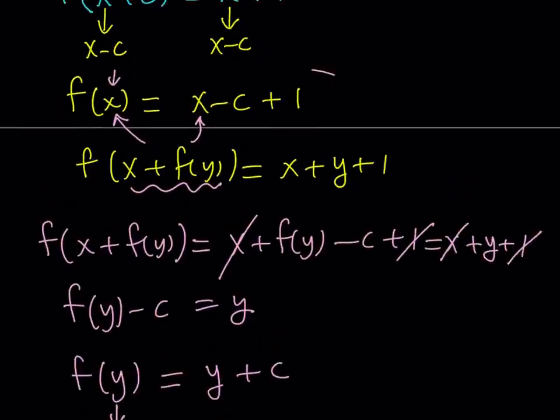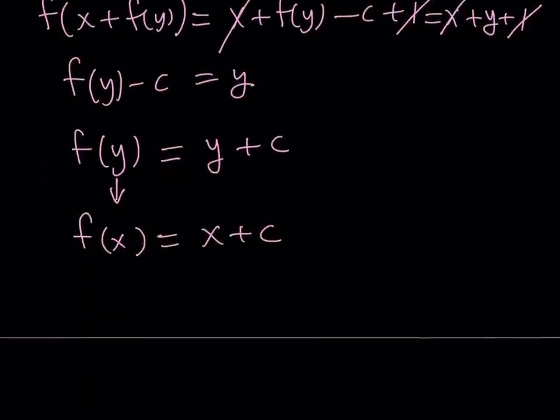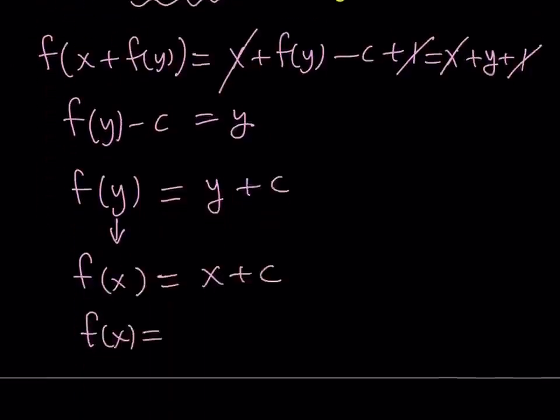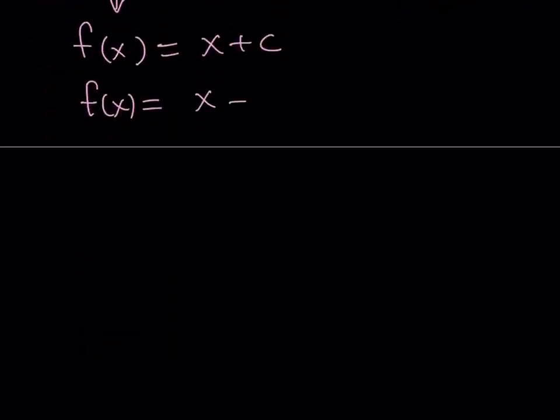But at the same time, we know that f of x equals this. So what is that supposed to mean? It means that they're equal to each other. So we know that f of x equals x plus c, as well as x minus c plus 1. Since both of these expressions are equal to f of x, they need to be equal to each other. Let's go ahead and set them equal to each other then.